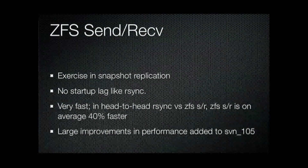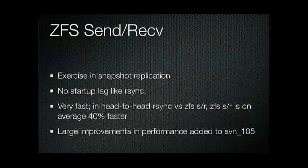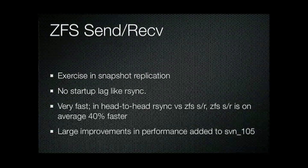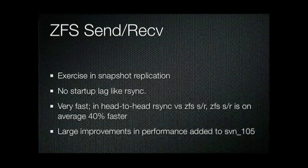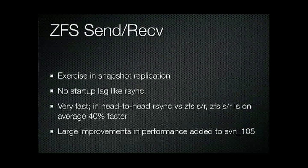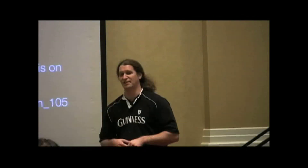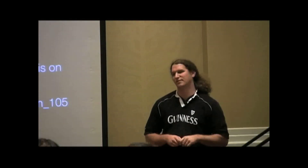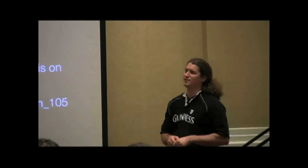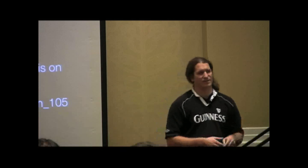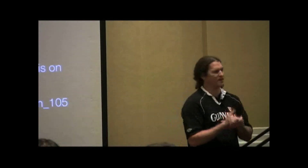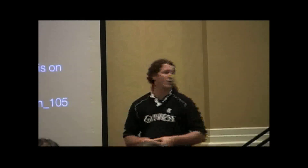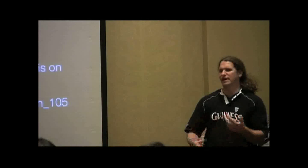The right way to back up ZFS is via send-receive — snapshot replication. The beauty of it is there is no startup lag like R-Sync; as soon as you start it, data is moving. I've heard people argue that R-Sync is faster than ZFS send-receive, but in every test I've done, ZFS send-receive is on average 40% faster than R-Sync in any situation. If you think otherwise, please provide real numbers. There were large performance improvements added in Nevada 105, and we keep seeing efficiencies added to make it faster.